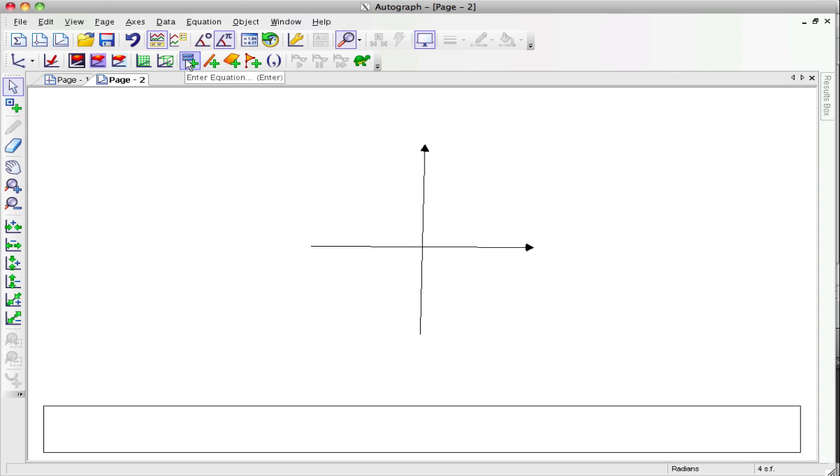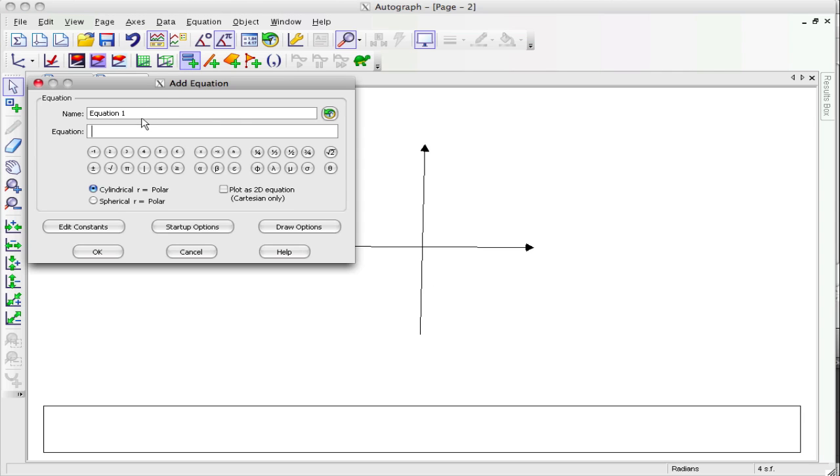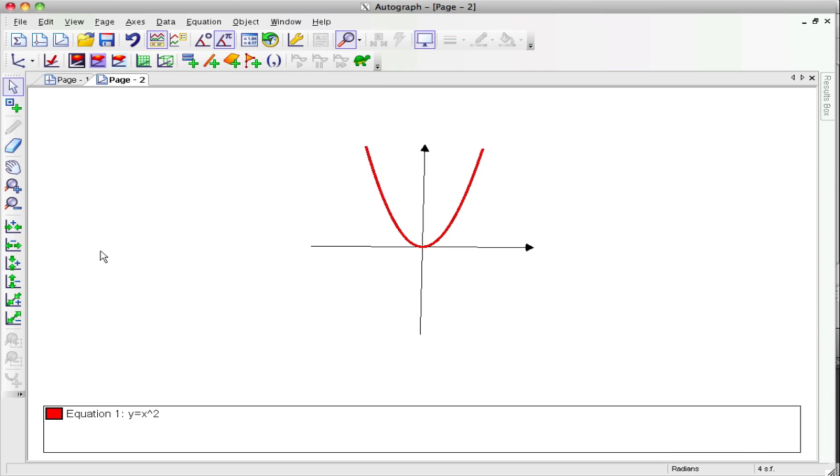So now push the equals button. And we'll just type in Y equals X squared. And make sure you click the plot as 2D equation. So we're dropping the Z axis. You can see it's just Y equals X squared.